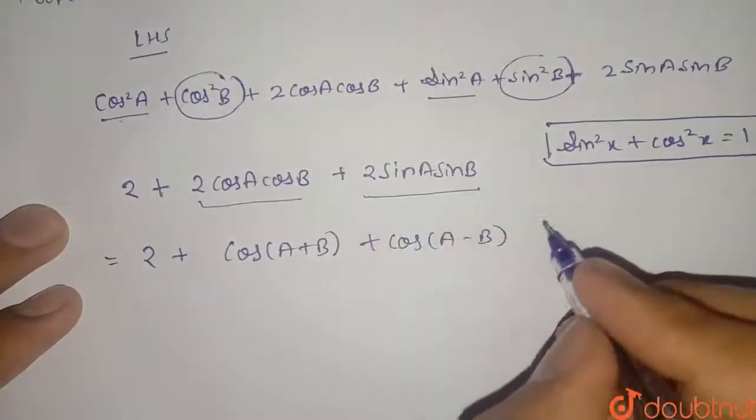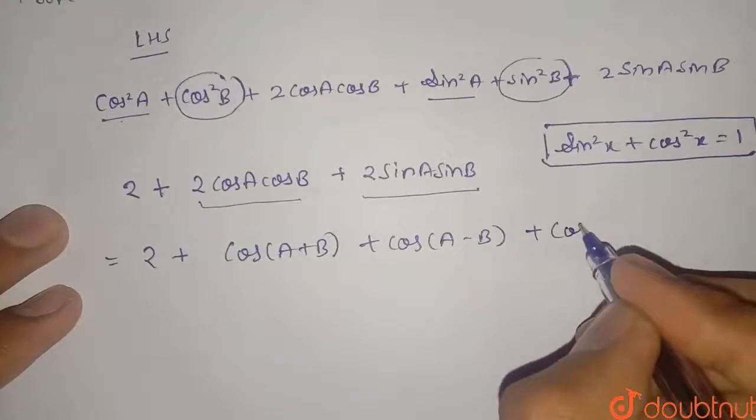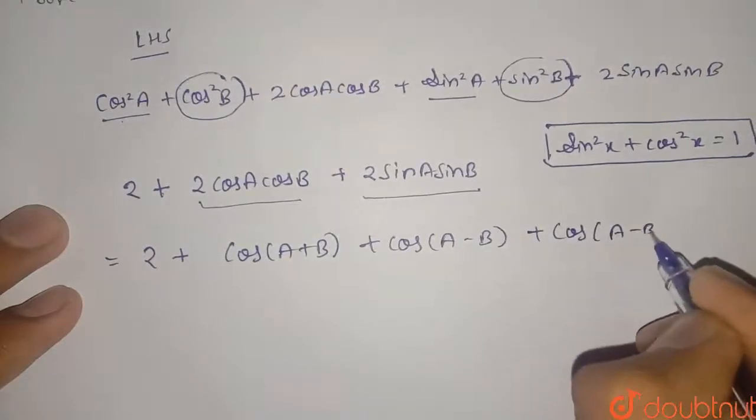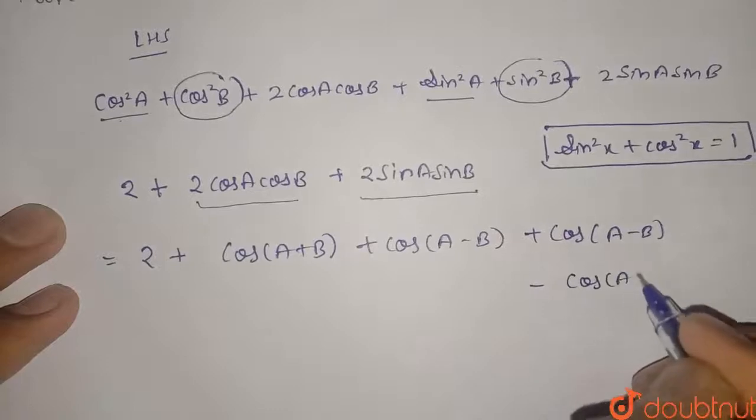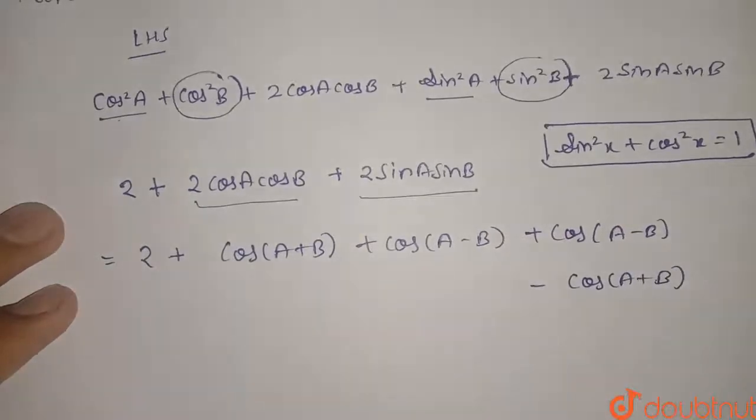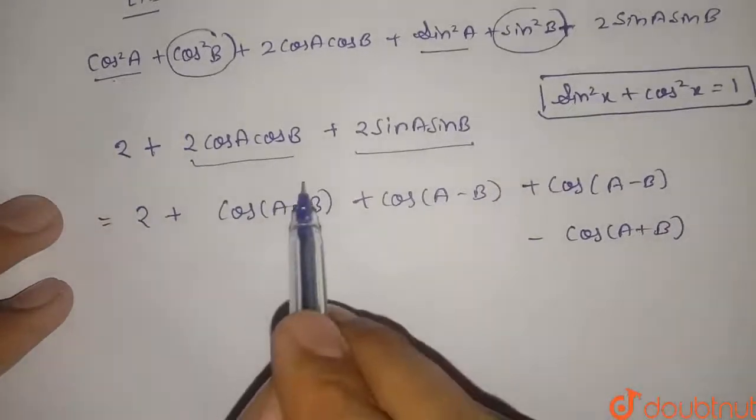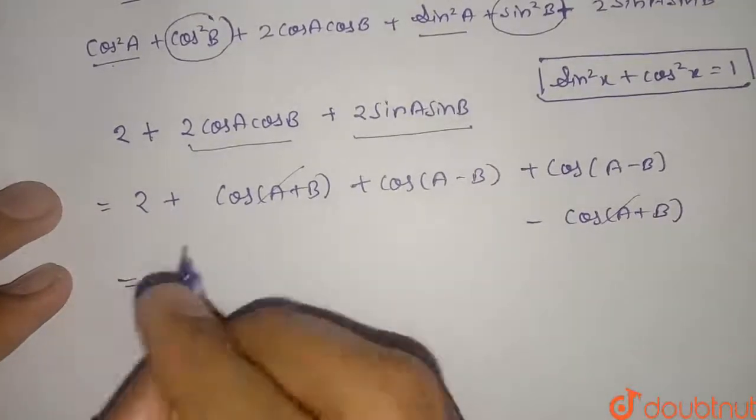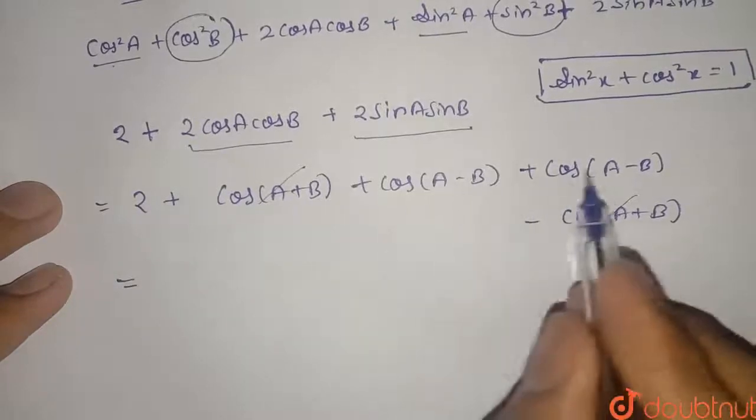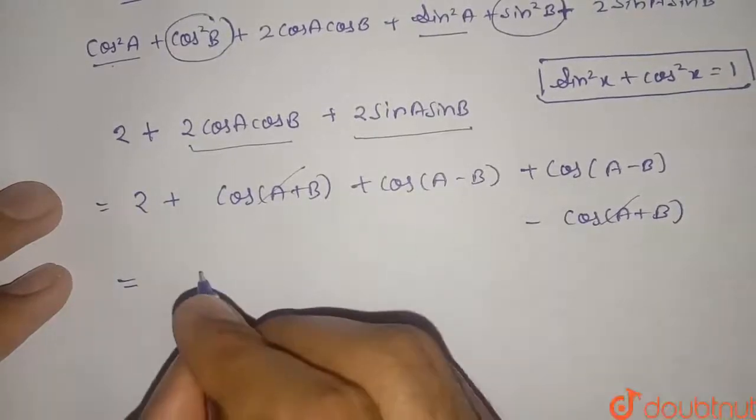From here, this term and this term will be cancelled out because it is plus and minus. Now this will be 2 + 2 cos(A-B).